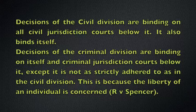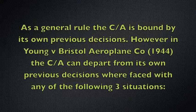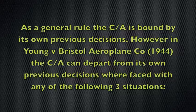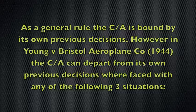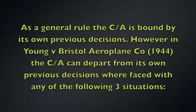A.V. v. Spencer is your authority case for that point. As a general rule, the Court of Appeal is bound by its own previous decisions, it binds the courts below it, and it is bound by the Supreme Court. For the Court of Appeal, according to the case of Young v. Bristol Aeroplane Co. 1944, which laid down these rules, the Court of Appeal can depart from its own previous decisions where faced with any of the following three situations.